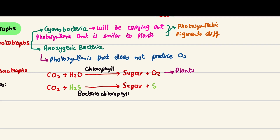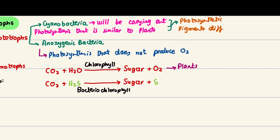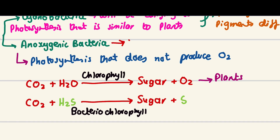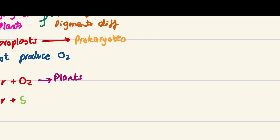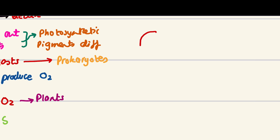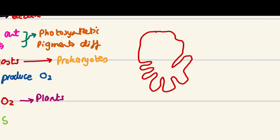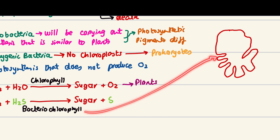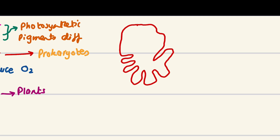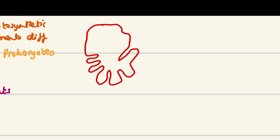Because bacteria are prokaryotes, they do not have chloroplasts — no chloroplasts, because prokaryotes do not have proper membrane-bound organelles. Instead, bacteria have invaginations in their membrane. These areas are called mesosomes, and the bacterial chlorophyll is present there, carrying out photosynthesis.